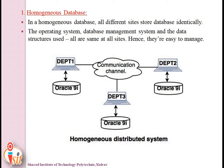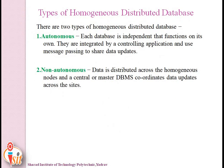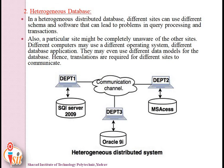A distributed database is classified into two types: homogeneous and heterogeneous. In a homogeneous distributed database, all different sites store the database identically — for example, Oracle 9i is used at all sites. Homogeneous distributed databases have two subtypes: autonomous, where each database is independent and functions on its own, and non-autonomous, where data is distributed across homogeneous nodes and a central or master DBMS coordinates data updates across the sites.